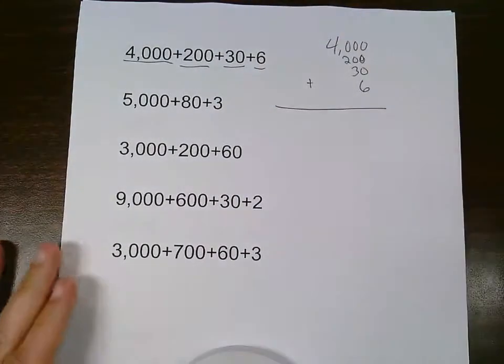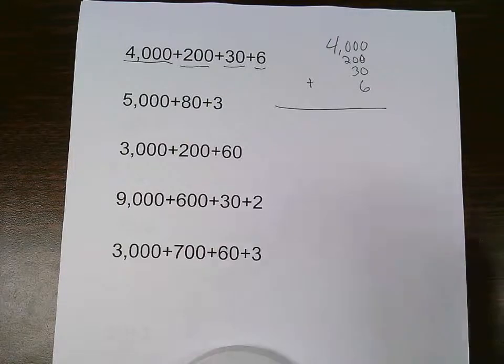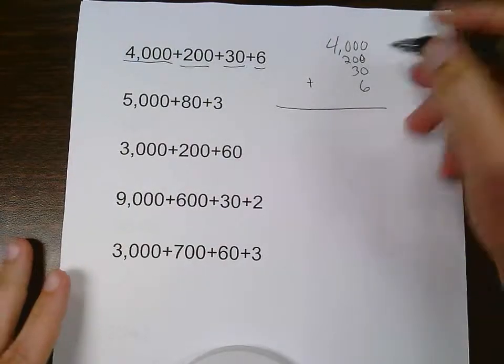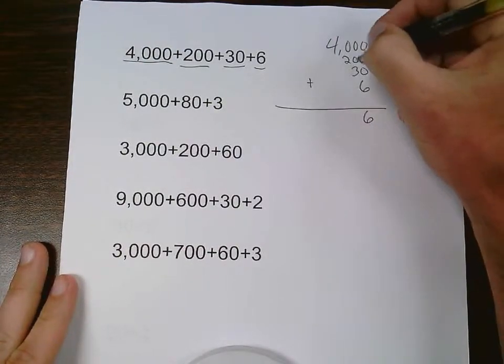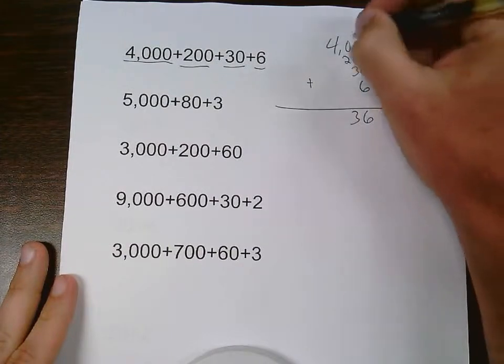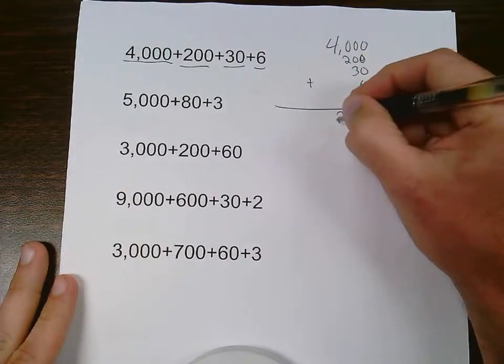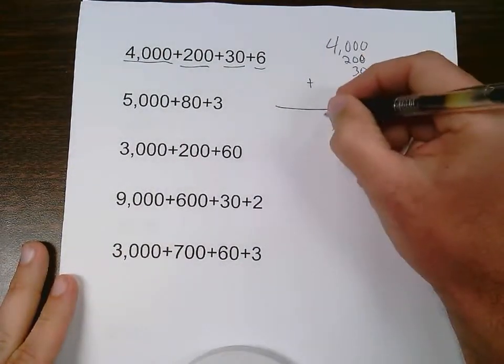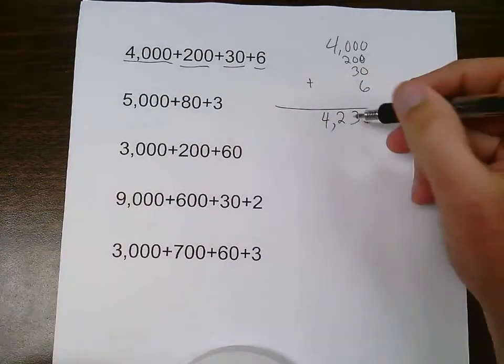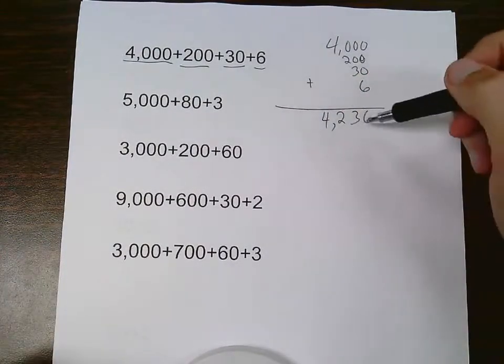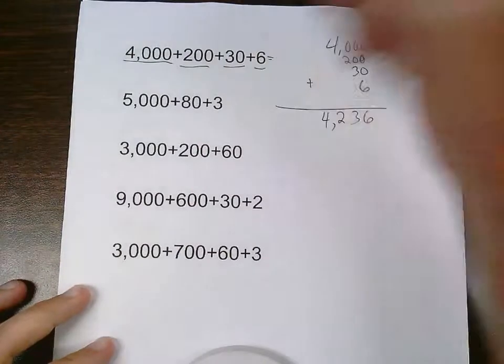And if I do that correctly, it's so easy to add up. 0 plus 0 plus 0 plus 6, 6. 0 plus 0 plus 3, 3. 0 plus 2, 2. Bring down my comma, and bring down my 4. 4,236 is the standard form of this expanded form number.